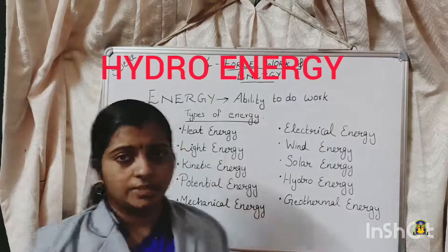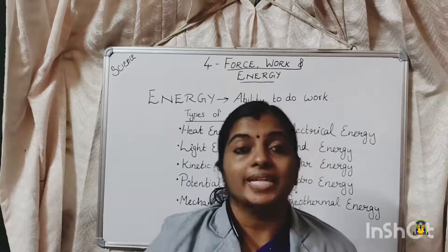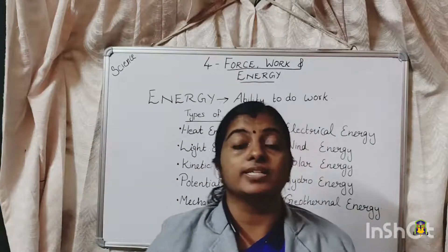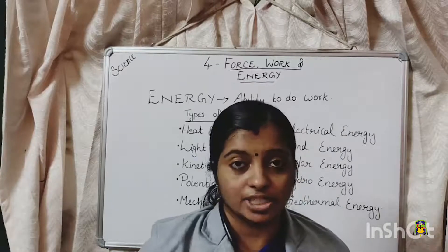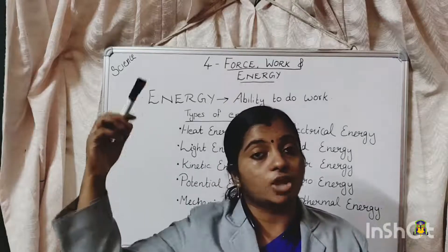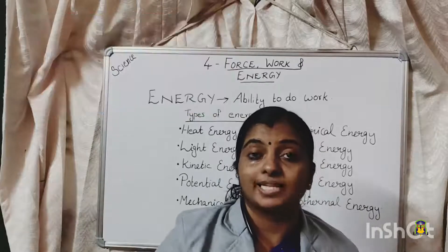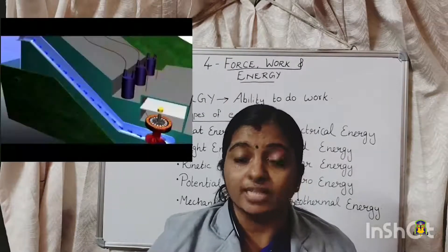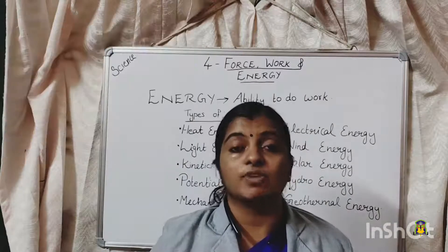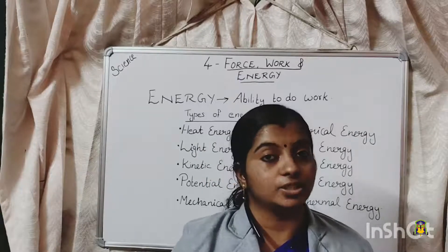Then, hydro energy. Hydro means water. The energy possessed by moving water is called hydro energy. How do we create electricity from water? The water is stored in heightened dams, and when we open the shutters it moves very fast. With the help of this speedy water we can produce electricity. So there we are making use of hydro energy — the energy from water is getting converted into electricity.